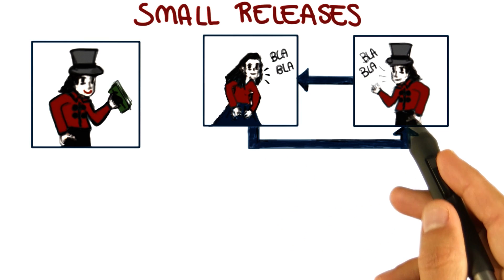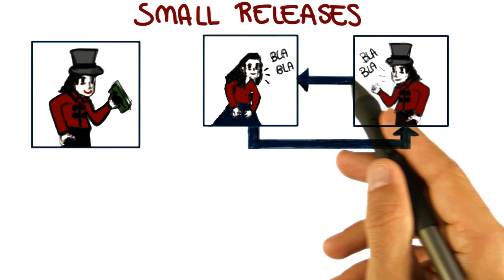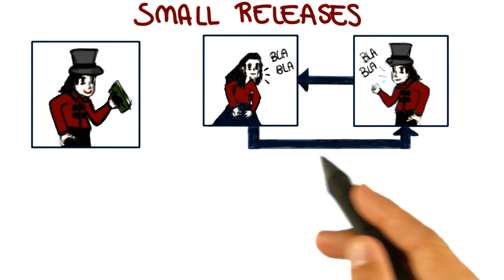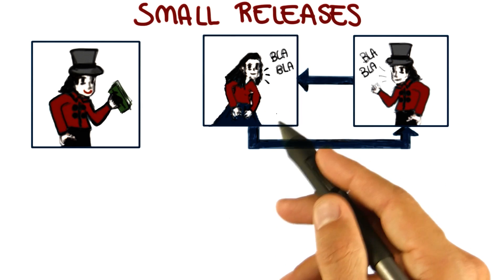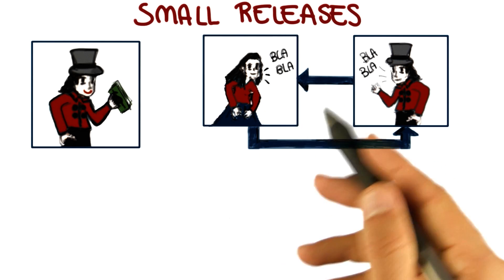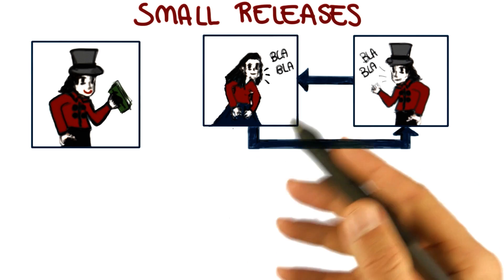Small releases also mean rapid feedback. We release the software soon, we get feedback from the customer soon, and we can in this way do exactly what we were saying before: steer instead of driving. Adapt quickly to possible changes in the requirements.